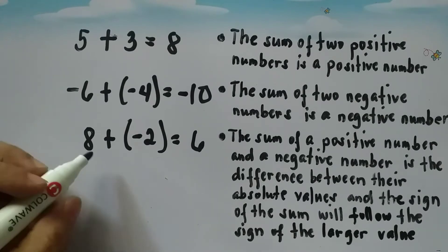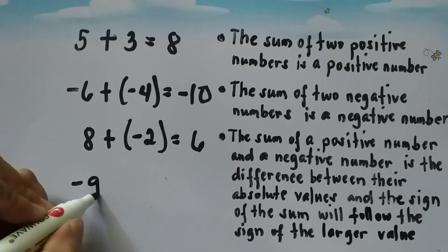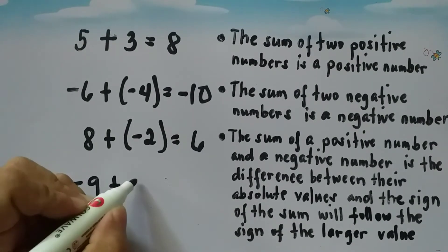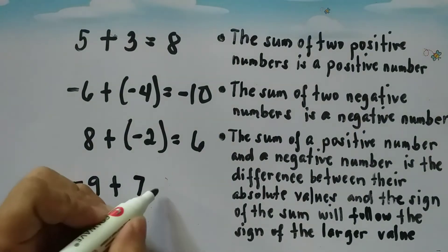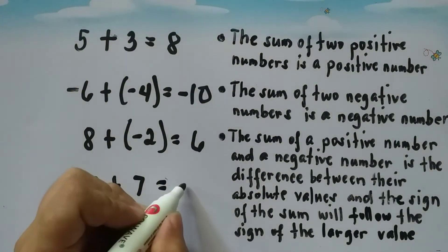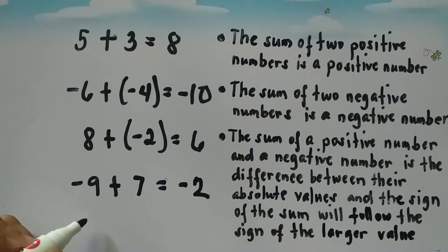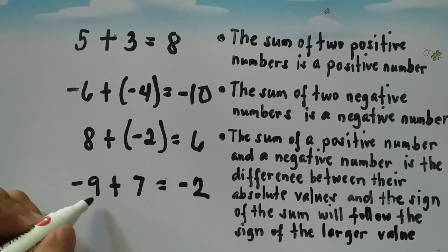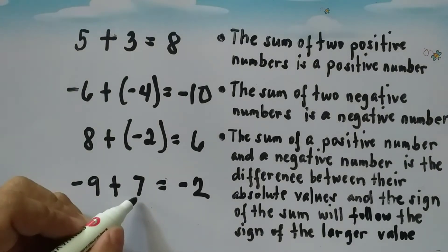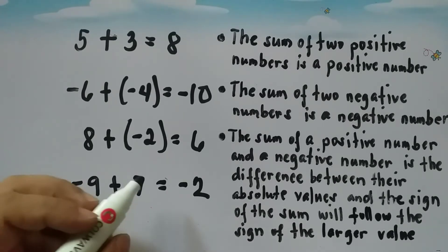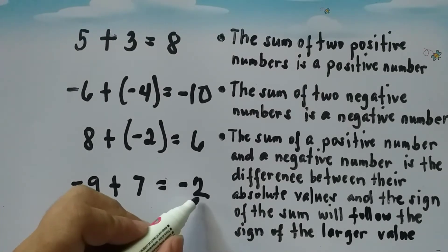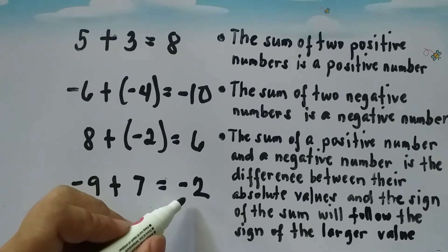So eight plus negative two is positive six. Another example: negative nine plus seven is equal to negative two. For example, if we have nine negative cases and from there seven were confirmed positive, then we have two negative cases left.